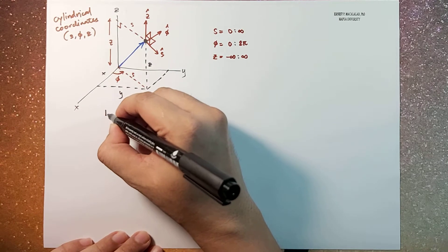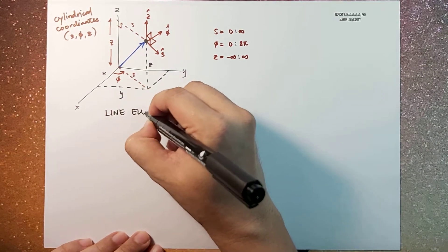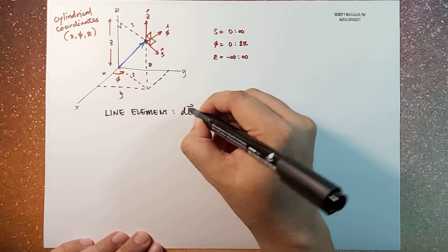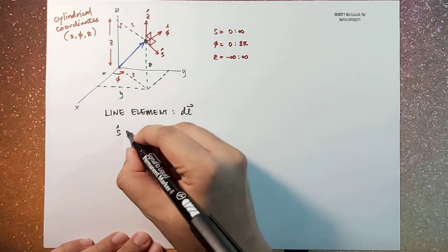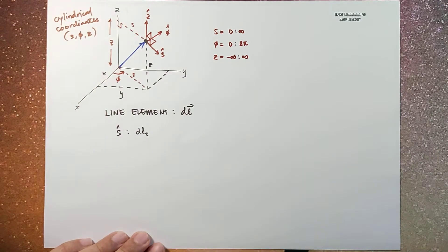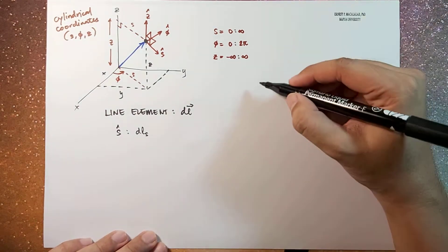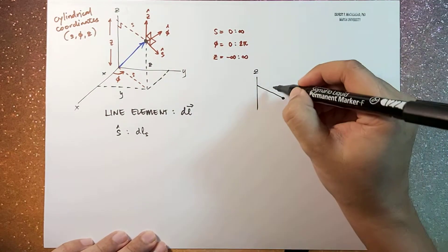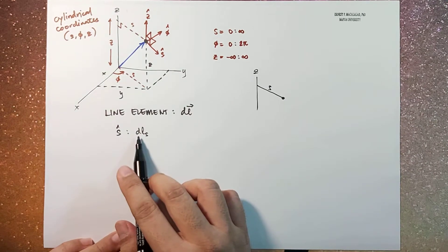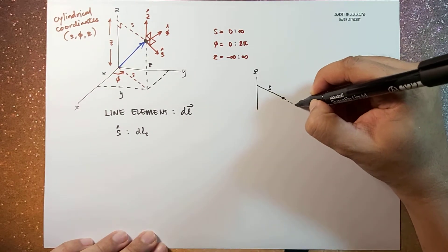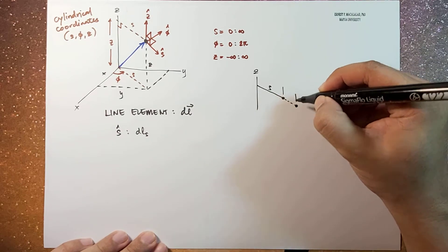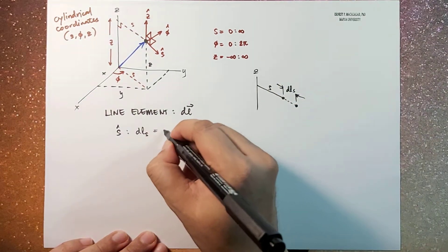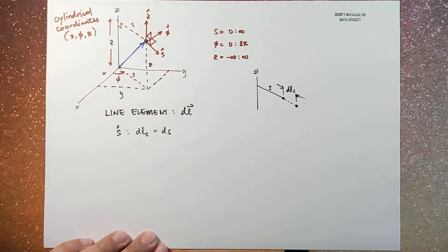Now if we're going to talk about a line element, it has three directions or three components. It has a component along the s direction, let's call this d ls. For example, if this is your z axis and this is your point and then this is your s component, the length along the direction of s would be along this direction. So this would be our d ls, which is equal to ds because this is just a linear length.